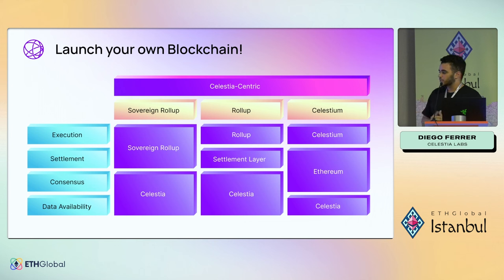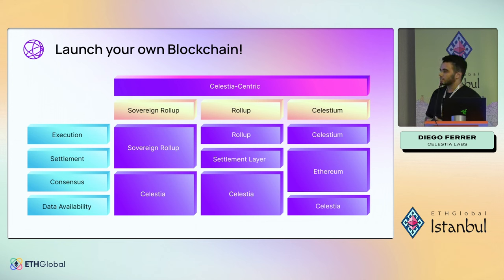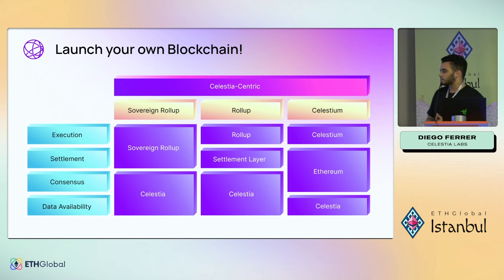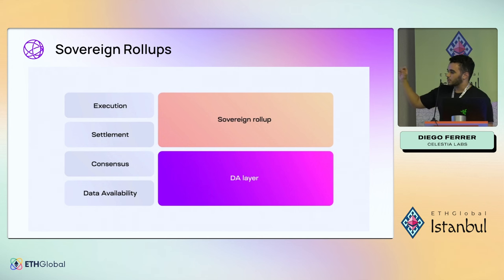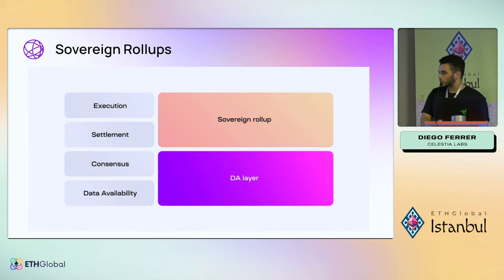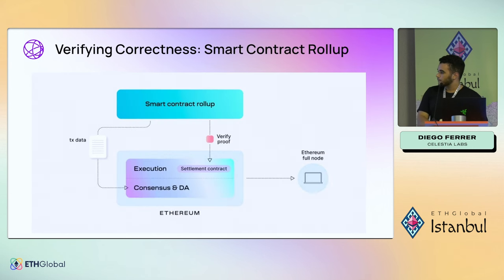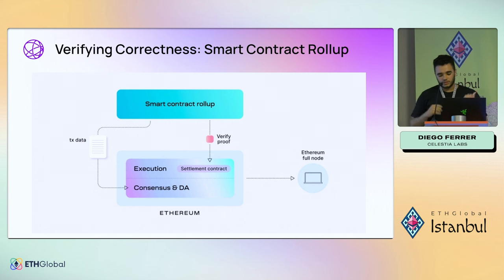Celestia only does data availability — no settlement, no execution — so there are many different flavors of rollups you can build with it. We're mainly going to talk about sovereign rollups and Ethereum rollups that use Celestia for data availability. A sovereign rollup takes care of both its own execution and settlement, making it a self-settling blockchain that delegates consensus and data availability to another blockchain such as Celestia.